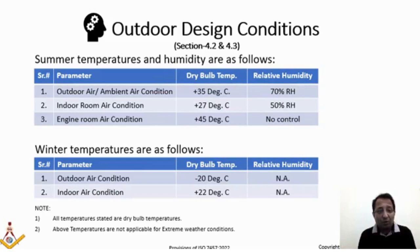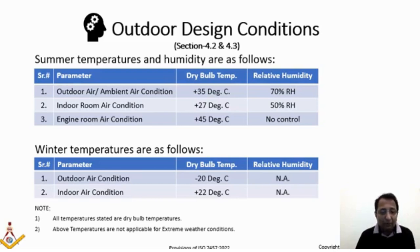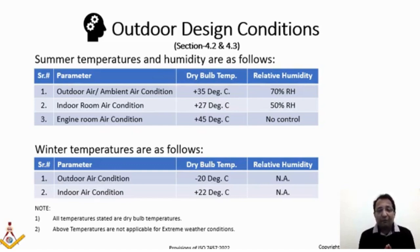For winter temperatures, the outdoor air condition is minus 20°C and the indoor condition is plus 20°C to maintain. All temperatures selected are dry bulb temperatures. There is no wet bulb specified, since for summer conditions 70% RH is already stated, and for winter there is no relevance of relative humidity. These temperatures are not applicable for extreme weather conditions. Heaters are therefore needed to achieve plus 20°C indoors from minus 20°C ambient.